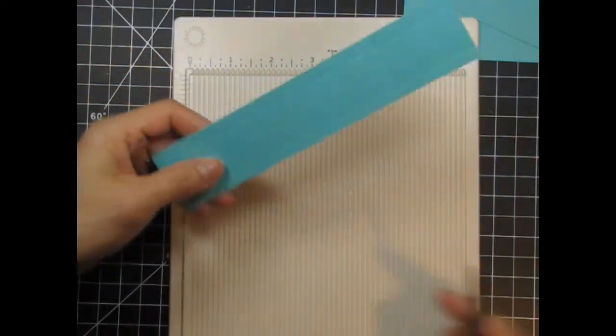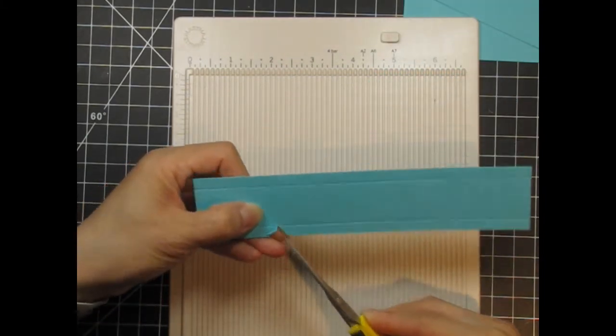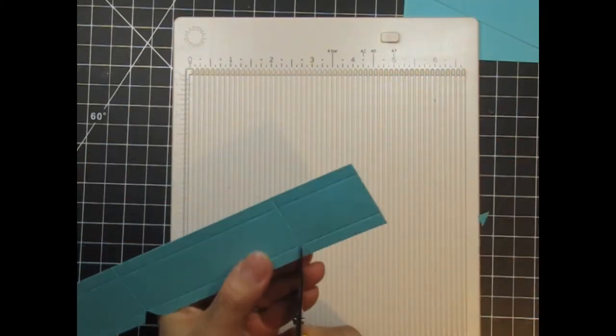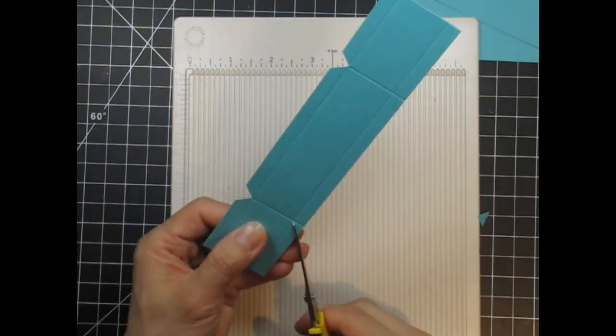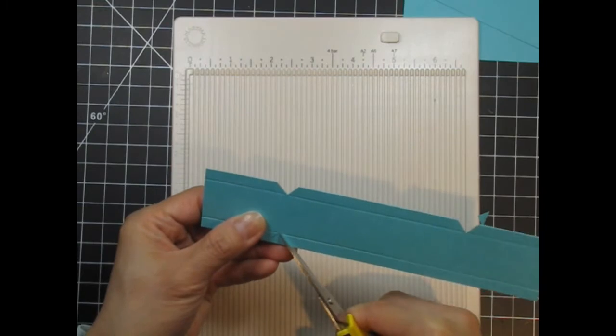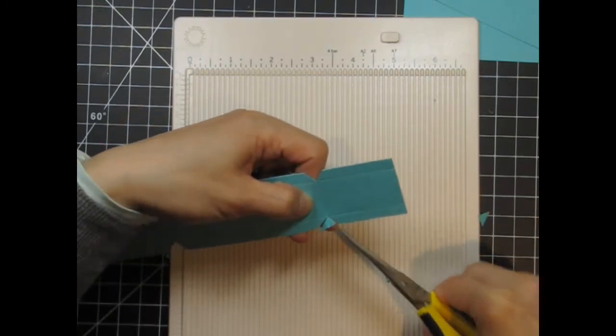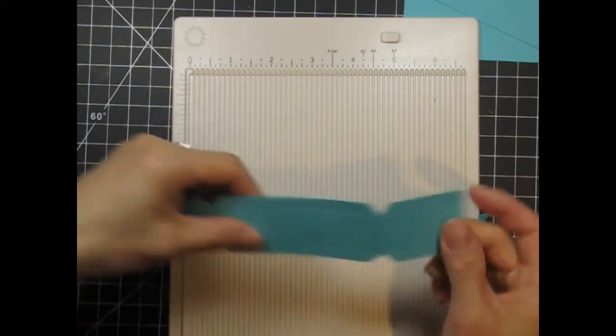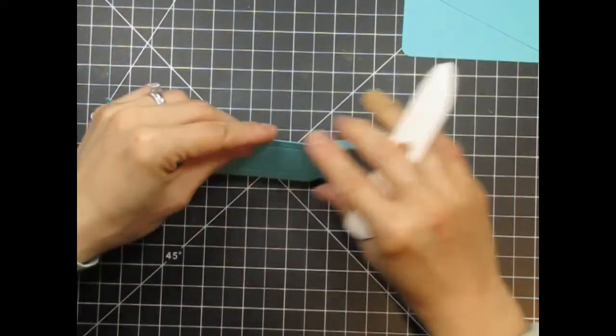Next, I take scissors and cut away triangles from the four intersections. After creating the notches, I can fold along the scored lines. Now, I've created the pocket for the treats.